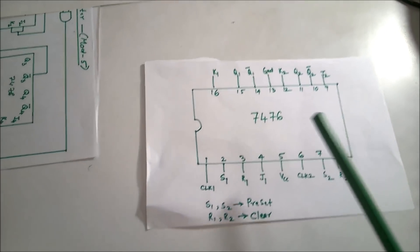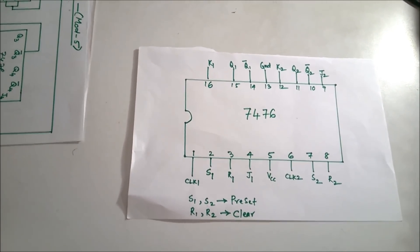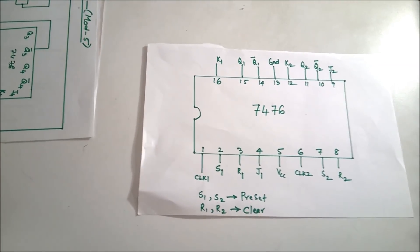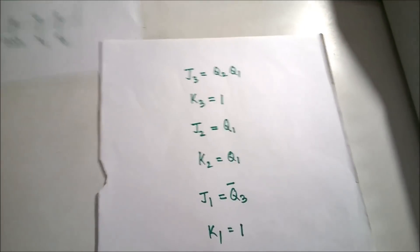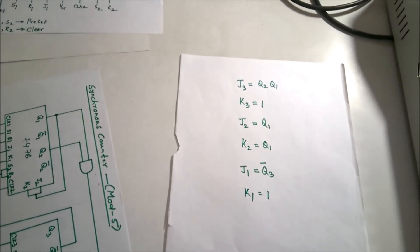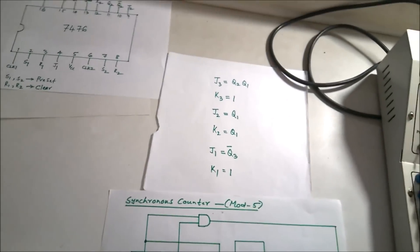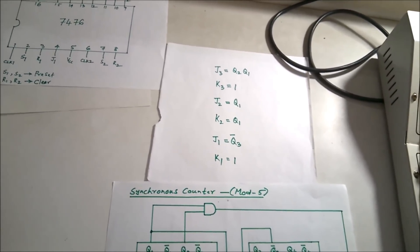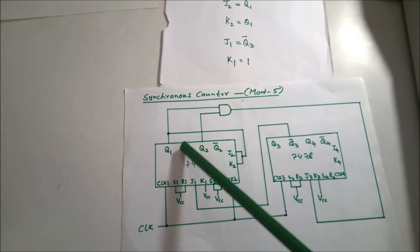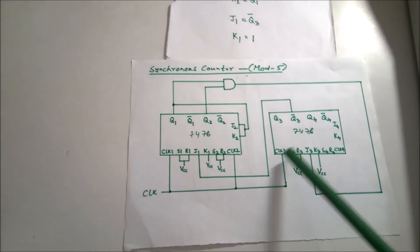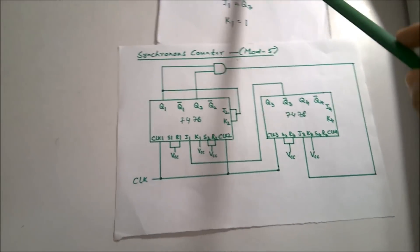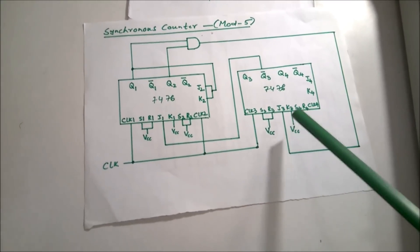The IC used is the 7476 — there are two 7476 ICs present. S1, R1 and S2, R2 are the preset and clear pins; to deactivate them we connect to VCC. Also used is the 7408 AND gate IC. After designing, we got J3 = Q2·Q1, so Q2 and Q1 are given as inputs to the AND gate and the output of the AND gate is connected to J3.